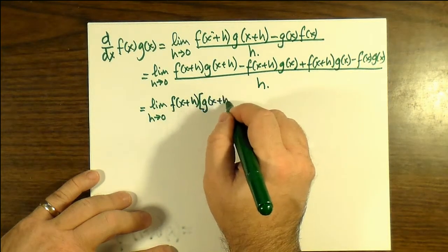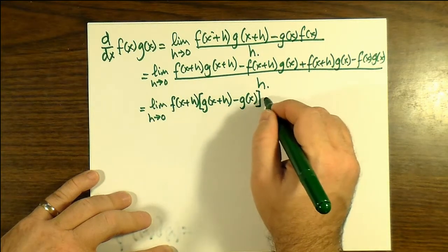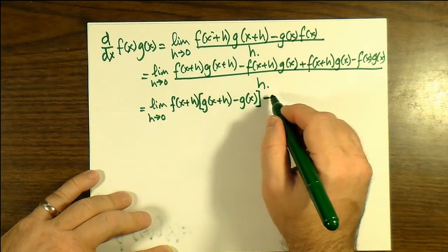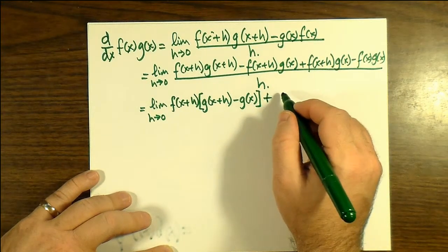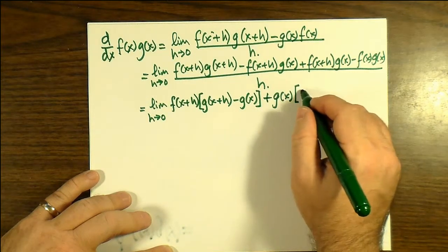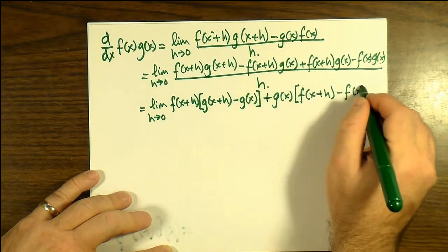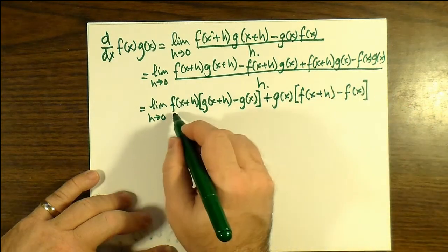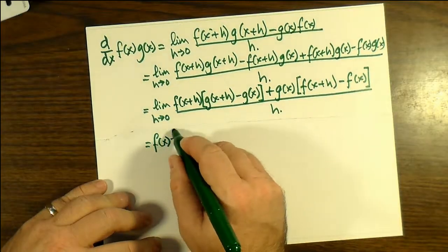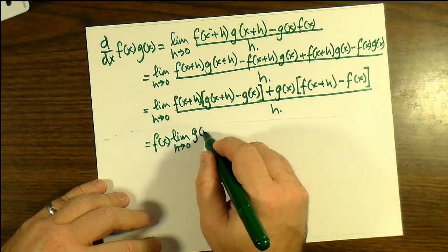Now we're going to factor out f(x+h) because it's common in the first two terms. That leaves inside g(x+h) minus g(x), which is rather convenient because that looks, when we divide that by h, like the familiar rate of change for g'. In the second set of terms, in the second pair, we can factor out g(x) and what's left is f(x+h) minus f(x), once again a candidate for f'. So it's starting to emerge.